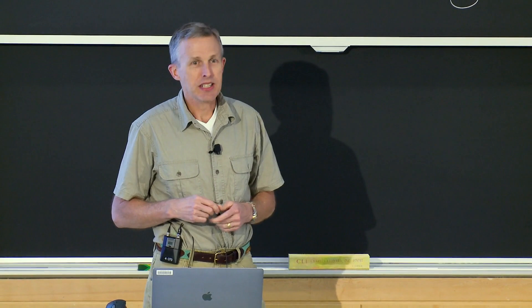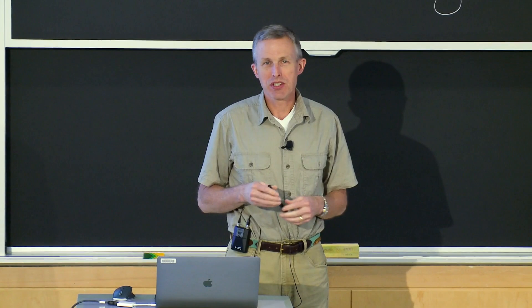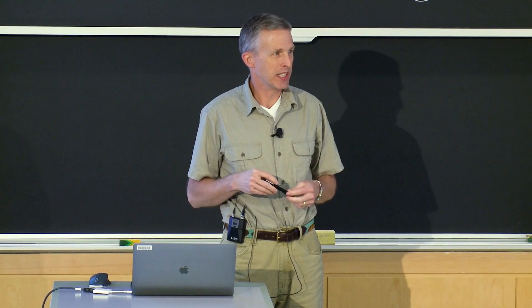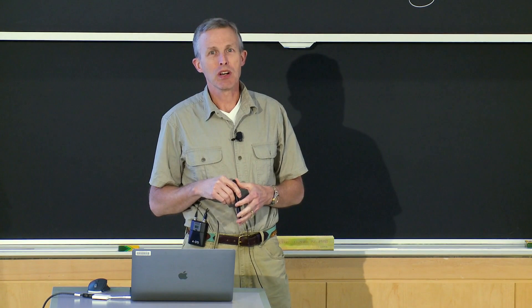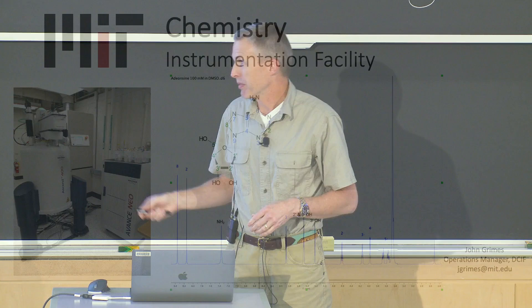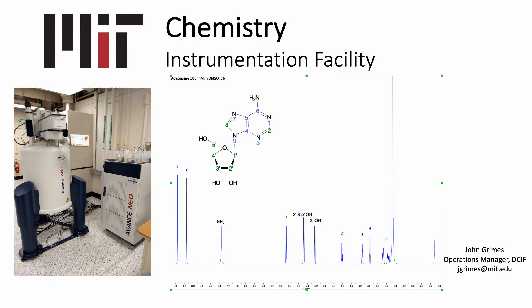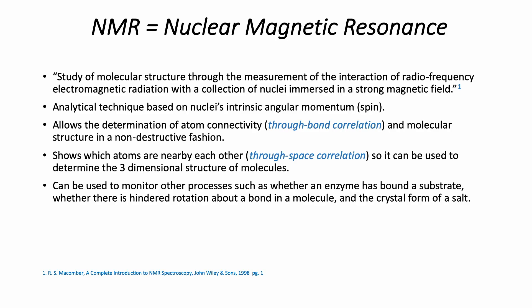What I hope to talk to you about today is what an NMR instrument is, what it actually consists of as far as the parts, what the analytical technique of NMR is, how we measure the signal, and then go into some examples of how to interpret the data. Here's a picture of one of our instruments and an example spectrum of adenosine.